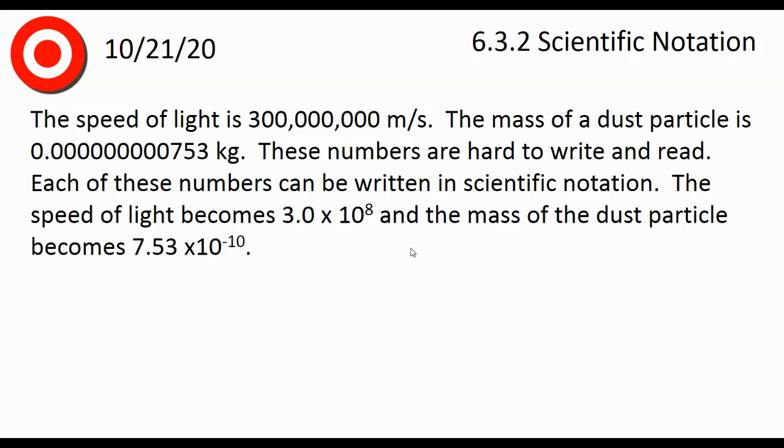Each of these numbers can be written in scientific notation. So the speed of light, instead of writing it as 300 million meters per second, I can write it as 3.0 or just 3 times 10 to the 8th power.